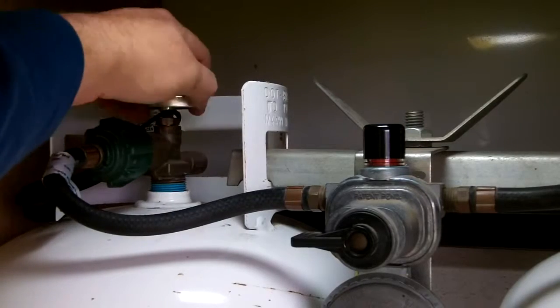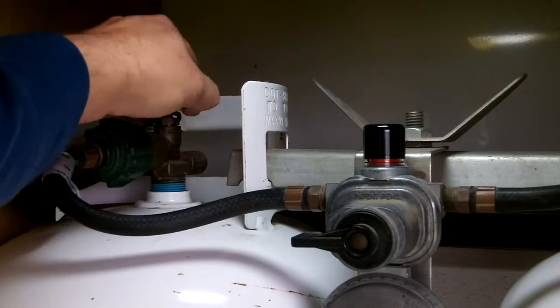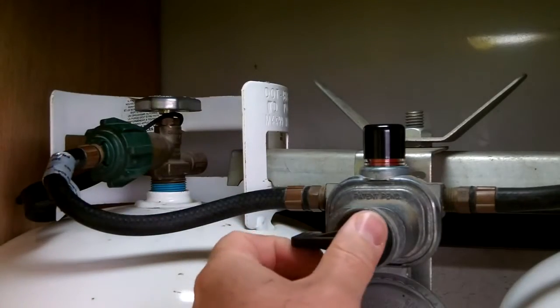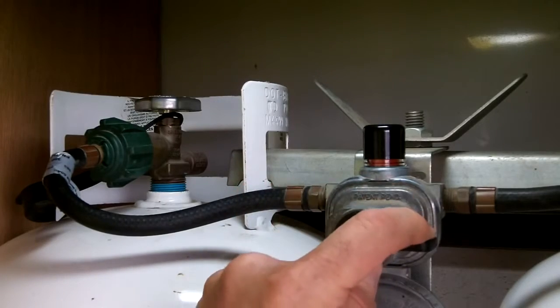When you run out of gas, shut off the valve on the first tank, then switch the tank selector lever over to the second tank, and open the valve on the new tank.